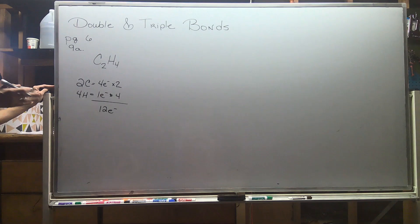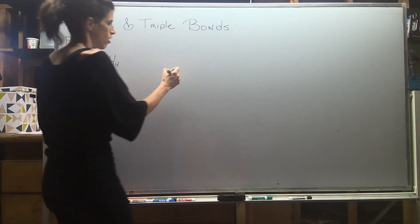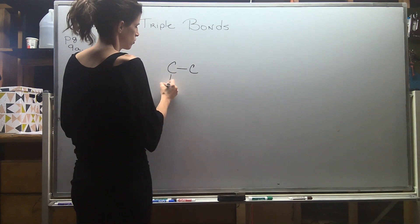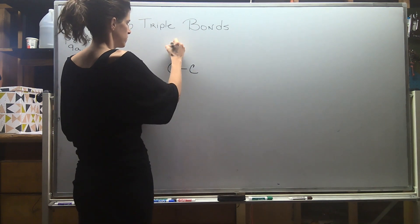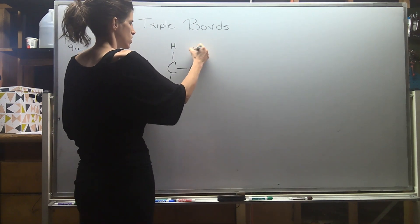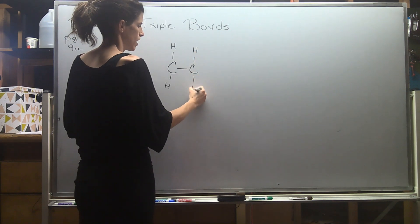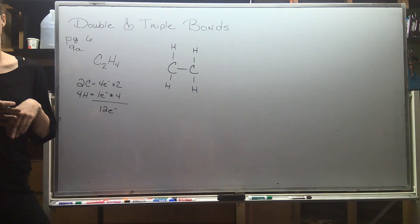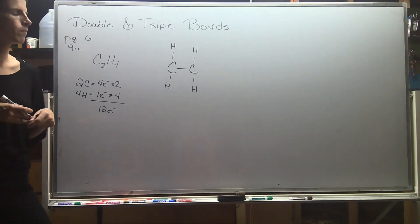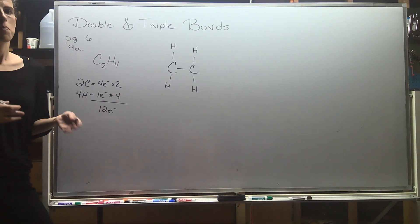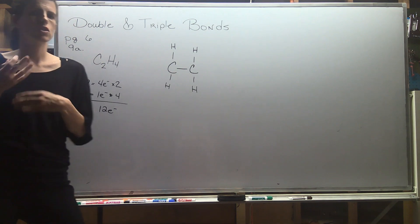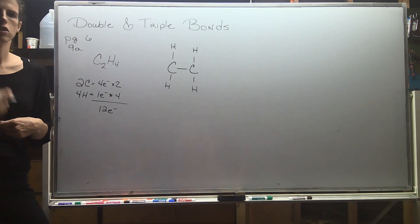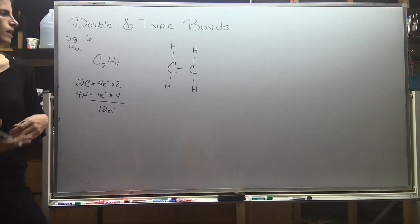Hydrogen can't be a central atom, so I'm going to connect the two carbons and just distribute my hydrogens. Sometimes students distribute the hydrogens differently — like three on one carbon and one on the other — but it won't work out. That's difficult to tell until you have some experience, so again, trial and error. Just be patient, use a pencil, just erase.